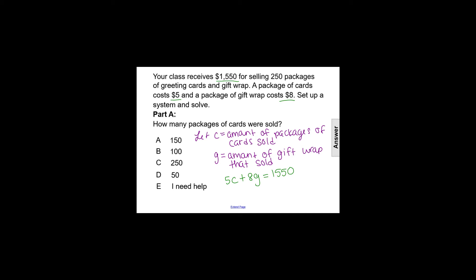The second equation is coming from the fact you sold, or your class sold, 250 total packages. So a total means we're adding together the two amounts, so C plus G equals 250.